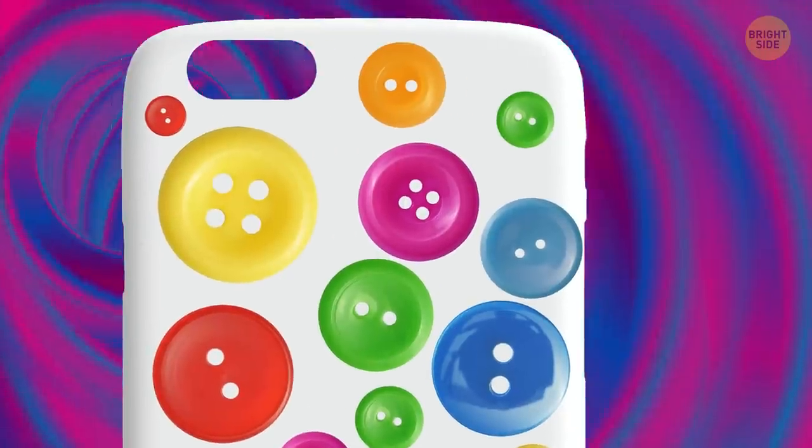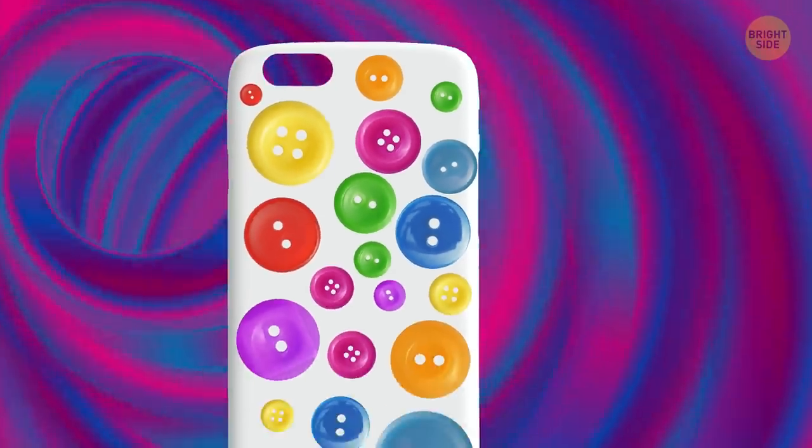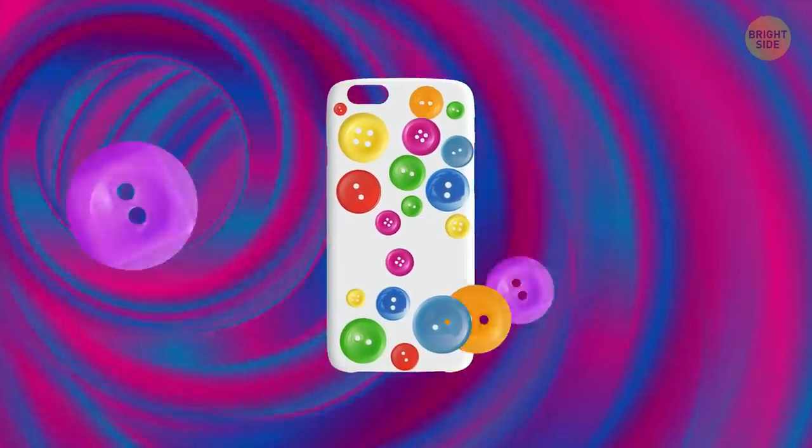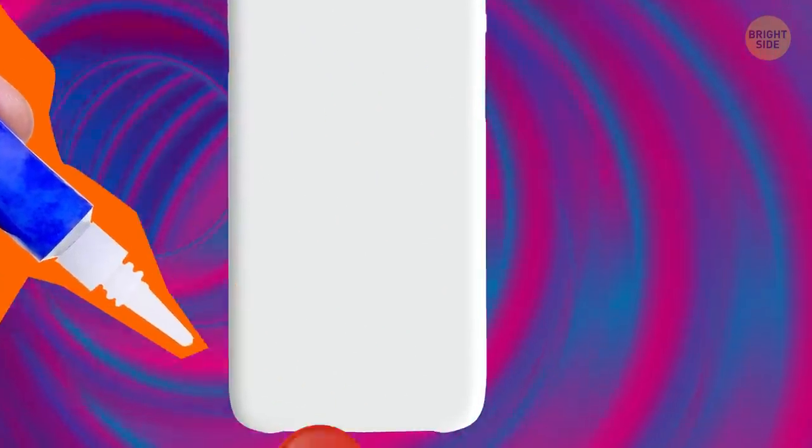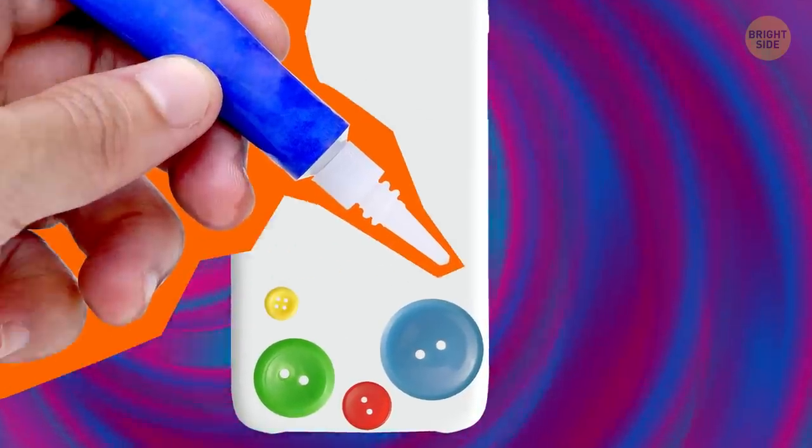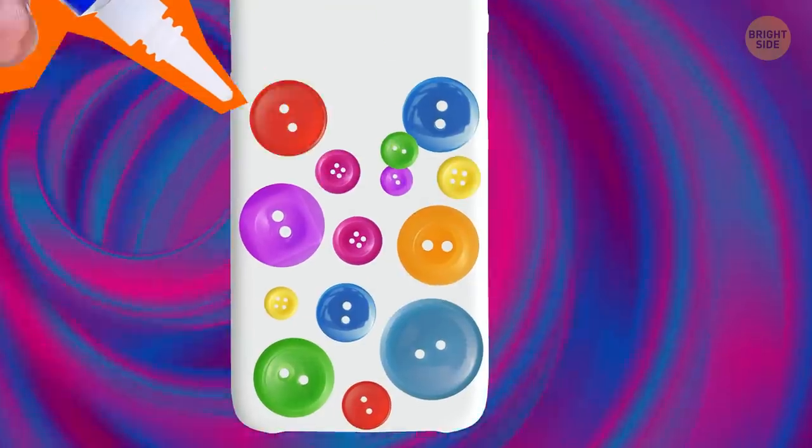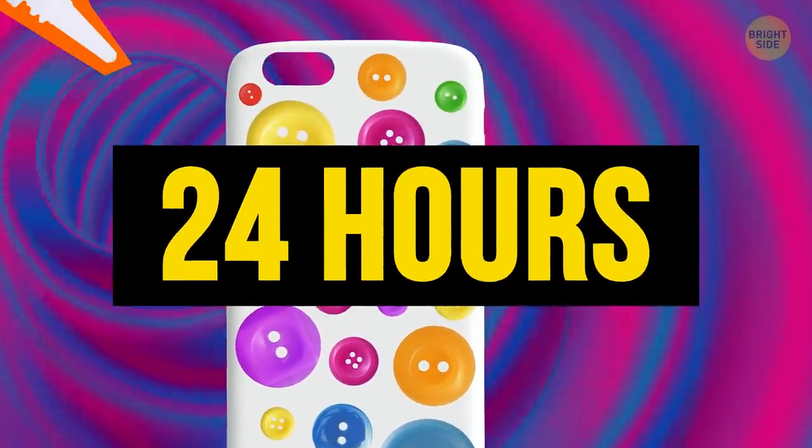Customize a plain phone case with colorful buttons. First, arrange the buttons around the case without using glue to see how they fit. Then, cover the top quarter of the case with super glue and stick the buttons to it. Continue to add glue and buttons section by section. When you're done, let the whole thing dry for 24 hours.